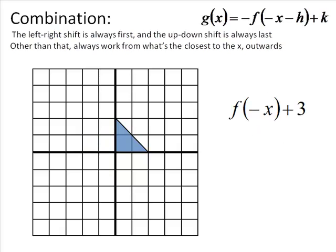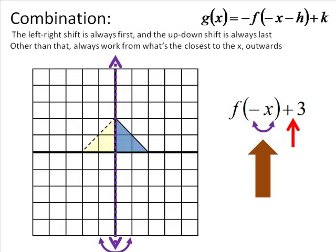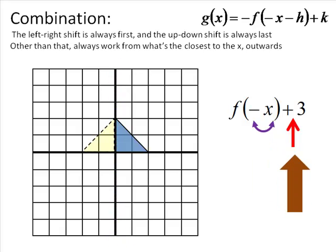Next example: we have stuff going on inside, so that's always first. And on the outside of the parenthesis there's a plus 3, so that's our up-down shift — it goes last. Working inside the parenthesis, we see a left-right flip. Then the plus 3 outside means we go up. So we start with the left-right flip, and then shift up 3 to the final position.